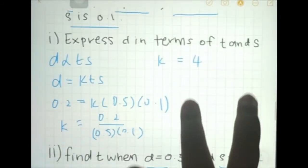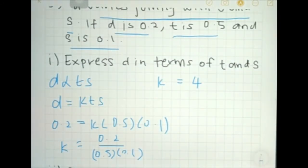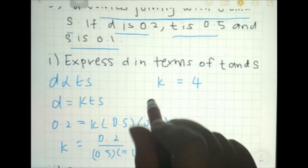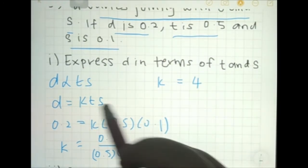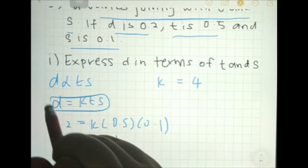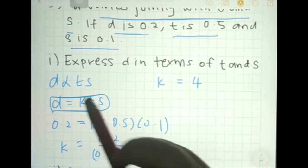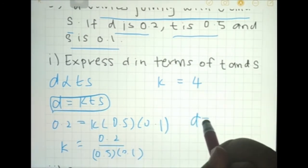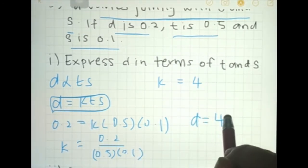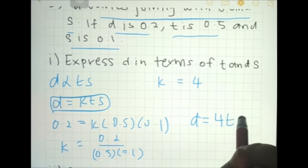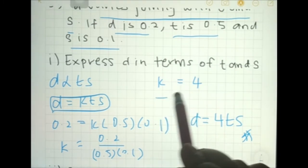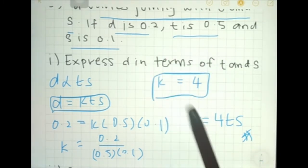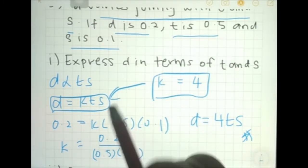I'm sorry — in the first question I didn't finish it. Once we find k, we need to put d in terms of t and s. Rewrite the equation with k substituted in: d equals 4ts. This is your final answer. Don't make the mistake I did — once you find k, always put it back into the equation.